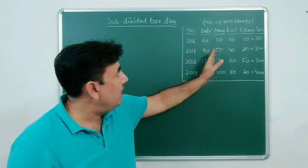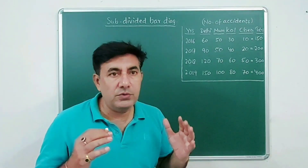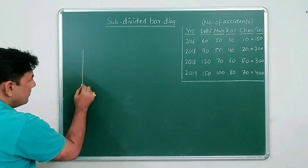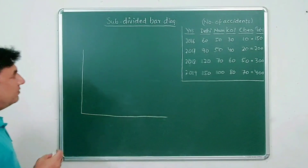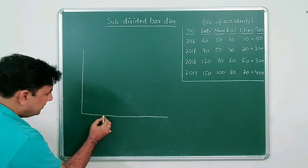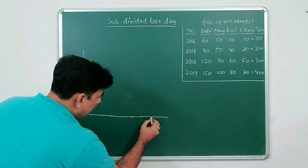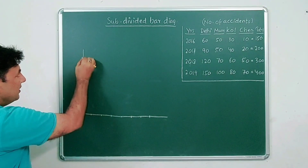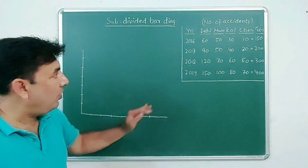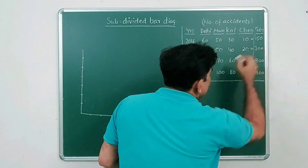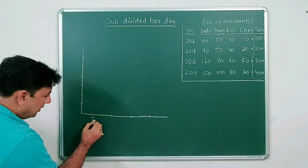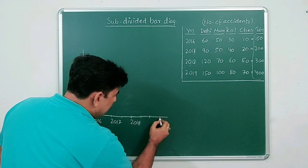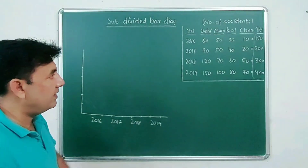The number of accidents in Mumbai, Delhi, Kolkata, and Chennai for each year is given. Let's draw the subdivided bar diagram. Mark the x-axis as years: 2016, 2017, 2018, 2019. Mark the y-axis as number of accidents. Make sure all intervals are equal.